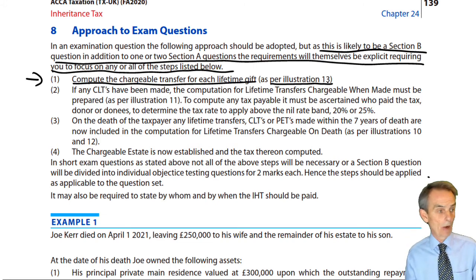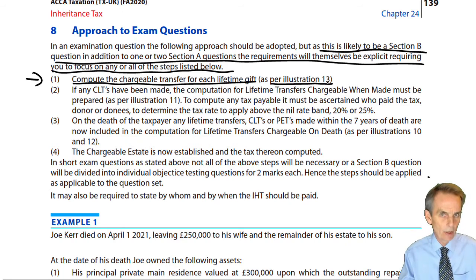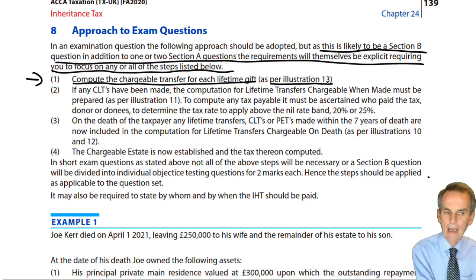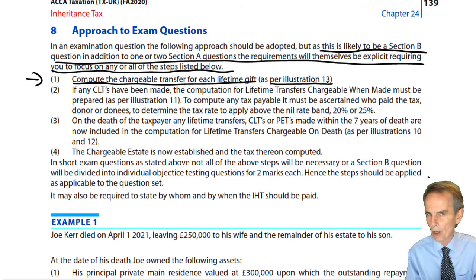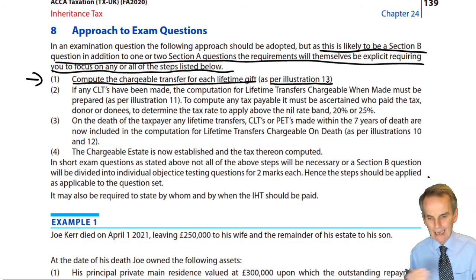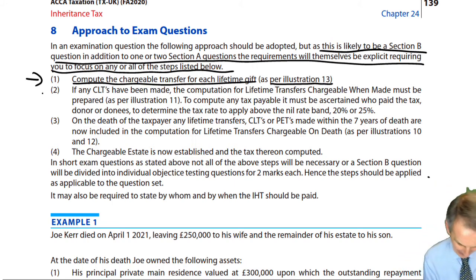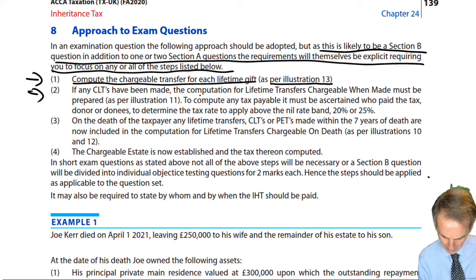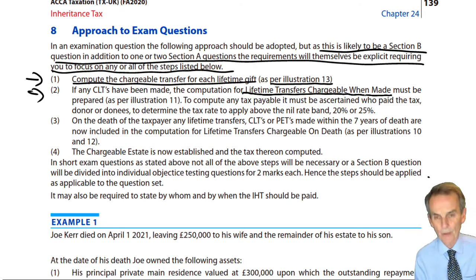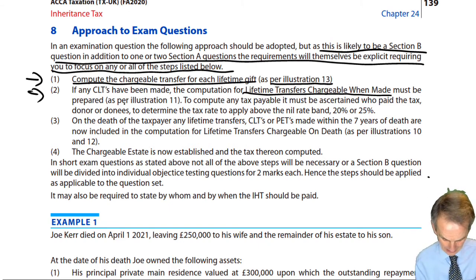We may have to compute the chargeable transfers. What were the transfers of value — the cash valued at, the property valued at, the chattel valued at — and then apply the marriage exemptions available and the annual exemptions. How do the annual exemptions apply? If we have a brought-forward unused amount from the preceding year, how does that interplay with the current year's annual exemption? We've got that work to do to get chargeable transfers. If there is a CLT, then as a second phase we compute any IHT payable in relation to lifetime transfers chargeable when made, as per illustration 11.